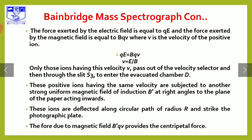So QE is equal to BQV. Therefore V is equal to E divided by B. Only ions having this velocity V pass out of the velocity selector and then through slit S3 to enter the evacuated chamber D.